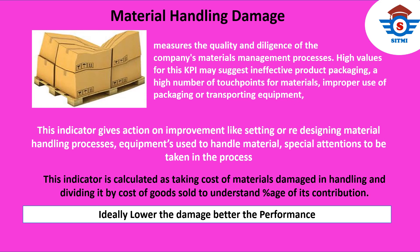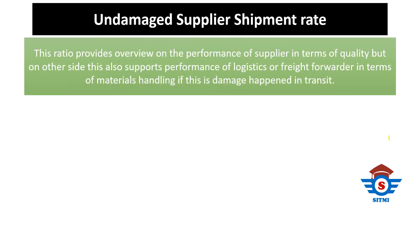Our next metric is Undamaged Supplier Shipment Rate. This is basically the ratio of total number of shipments received from a supplier in undamaged condition to the total number of shipments received in a particular time period. This ratio provides an overview of supplier performance in terms of quality, and also supports evaluation of logistics or freight forwarders in terms of material handling.